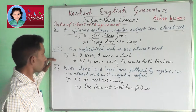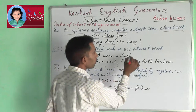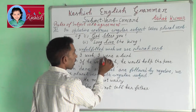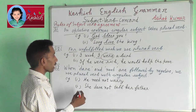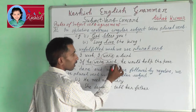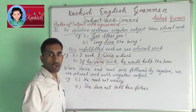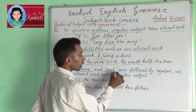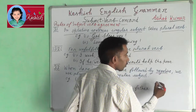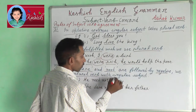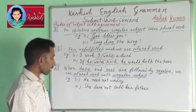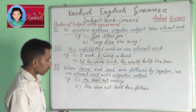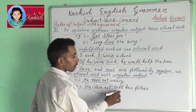Rule 32: For an unfulfilled wish, we use a plural verb. For example: I wish I were a bird. If he was rich, he would help the poor. Rule 33: When dare and need are followed by a negative, we use a plural verb with a singular subject. For example: she dare not tell her father.